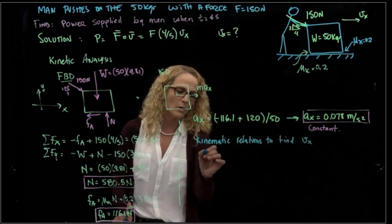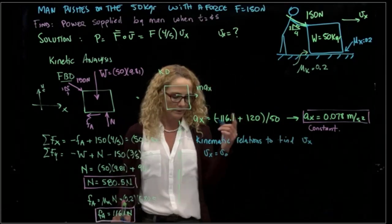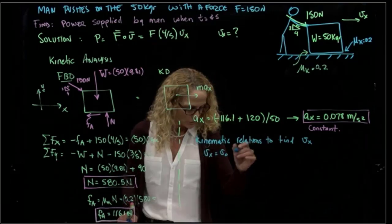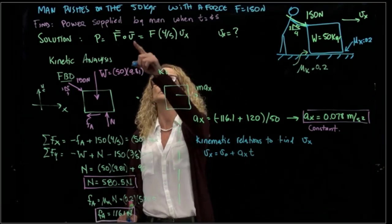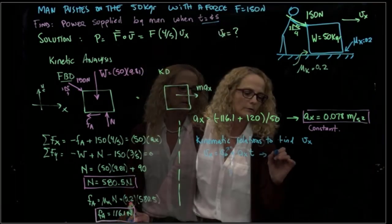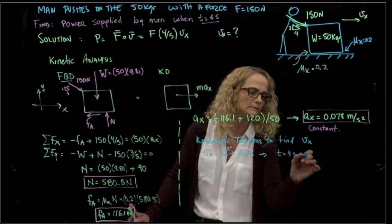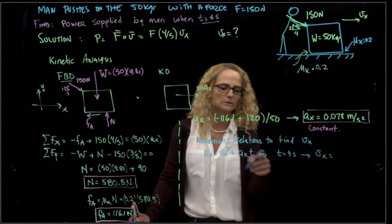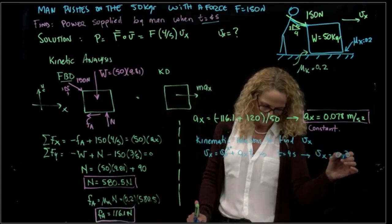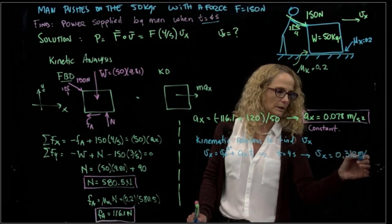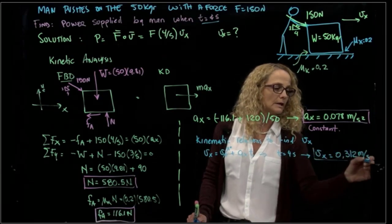We know that the velocity x will be the initial velocity, and we know that it starts from rest, plus acceleration times time. Time is given because we say that it is in 4 seconds, for t equals 4 seconds, velocity x is equal to the acceleration times time, which is 0.312 meters per second. This is our velocity.